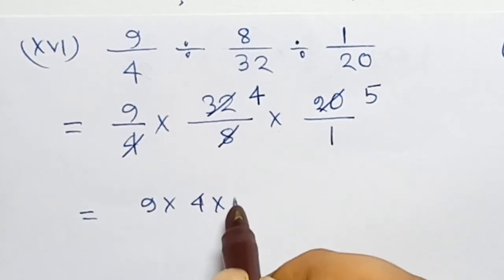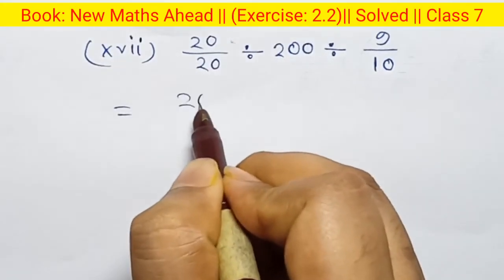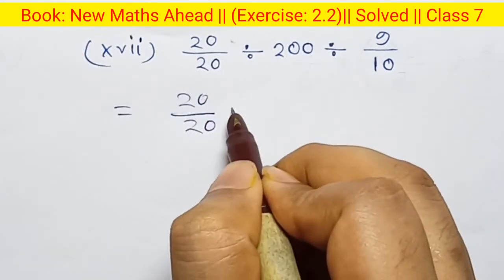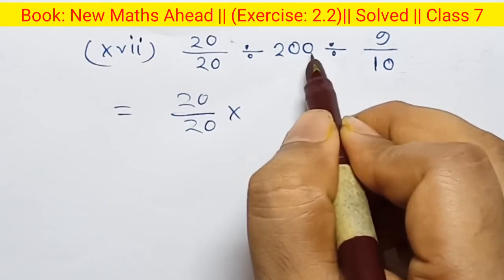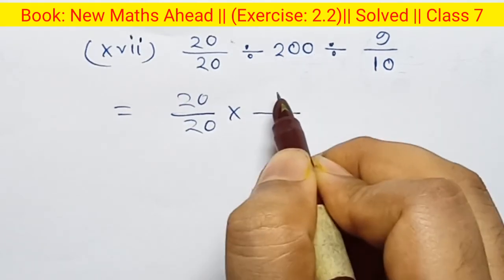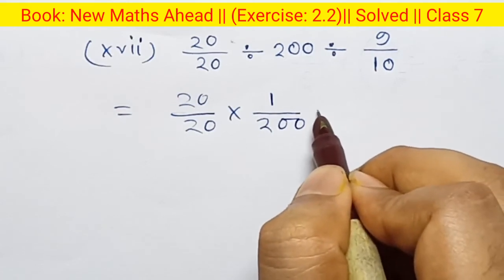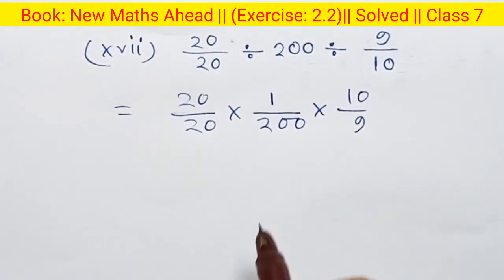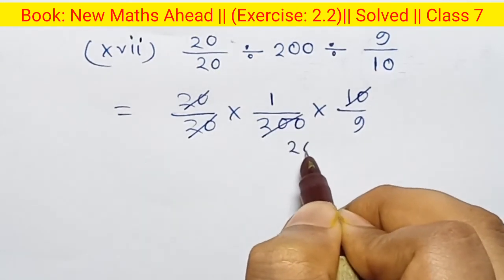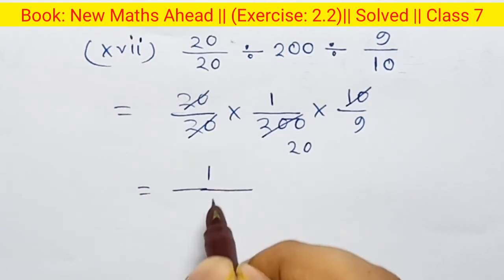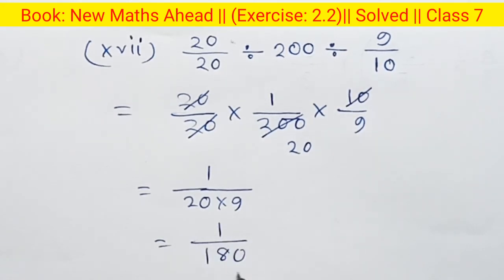Nine into 4 into 5 — product is 180. Next, 20 by 20 — divide becomes multiplication — 200. Numerator value 200, denominator is 1 — so 200. Reciprocal is 1 by 200. Next, multiplication: 10 by 9. Twenty and twenty cancel — 10 and 200 cancel, twenty times. Numerator: 1. Denominator: 20 into 9 — product is 1 by 183.